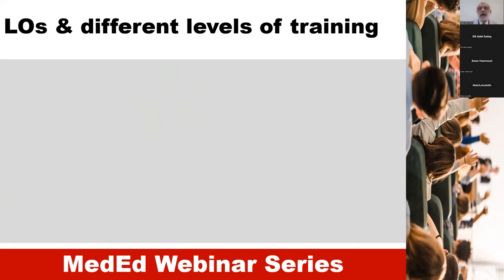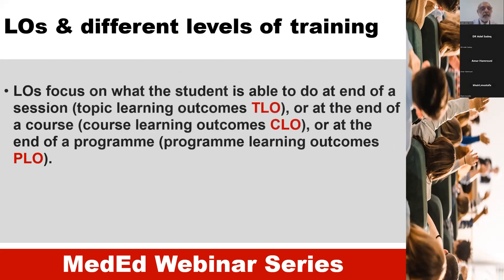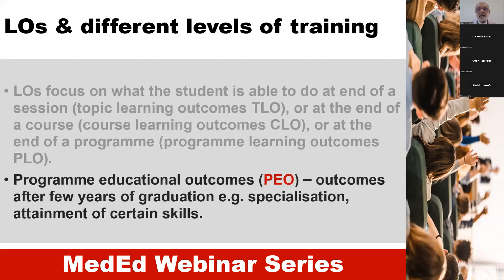The learning outcomes are defined differently for different levels of training. Learning outcomes focus on what a student is able to do at the end of a session — that would be called the topic learning outcome. If it is at the end of a course, it would be called the course learning outcome. And if it is at the end of the program, it would be called the program learning outcome. There is another term, program educational outcomes or program educational objectives, which are the learning outcomes a graduate is expected to achieve a few years after graduation, regarding specialization or attainment of certain skills.